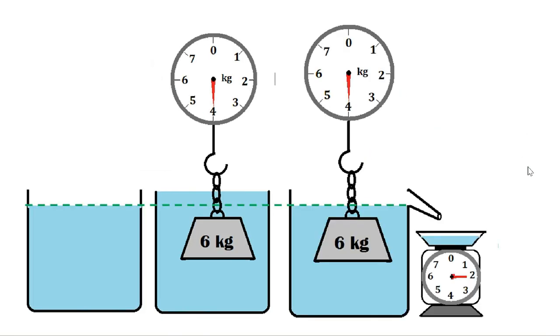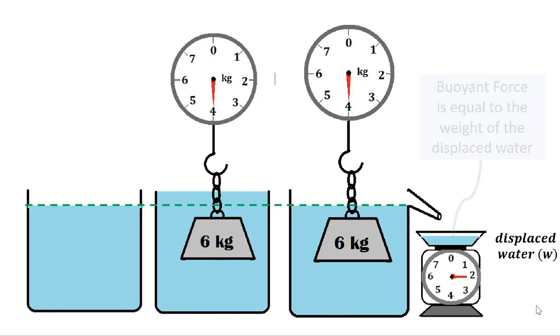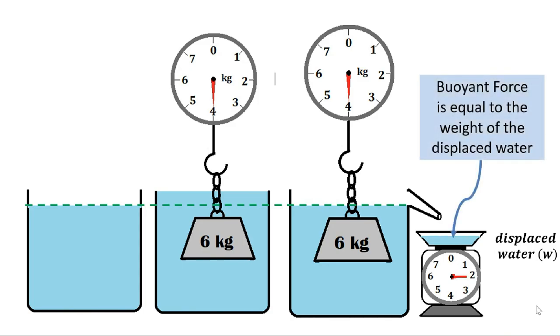For suspended objects, we have to remember that the buoyant force is equal to the weight of the displaced water. So buoyant force Fb is just equal to the weight of the water.